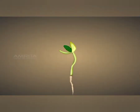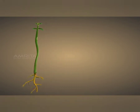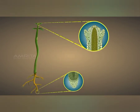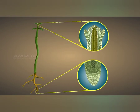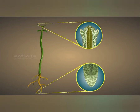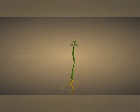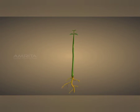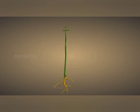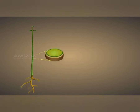Apical meristems — apex means tip — so they are present at the tips of the stem as well as the root. They are responsible for the increase in the length of the plant. So apical meristems increase the length of the root as well as the stem.